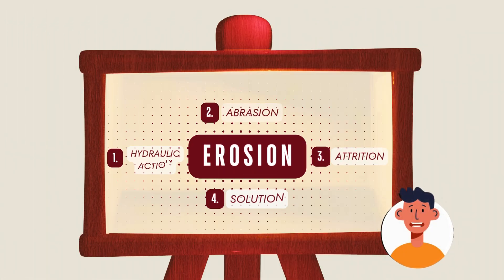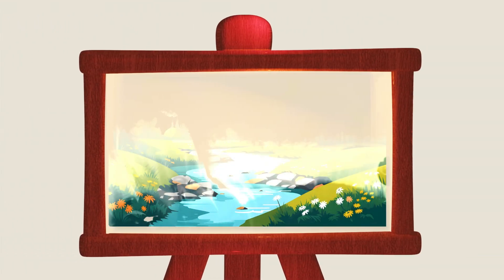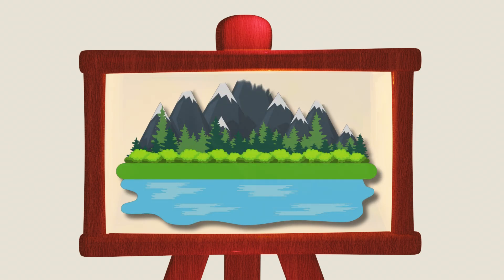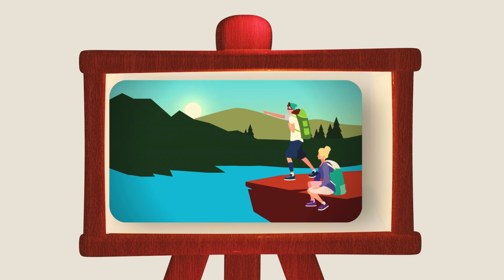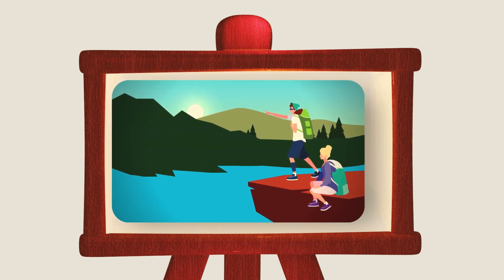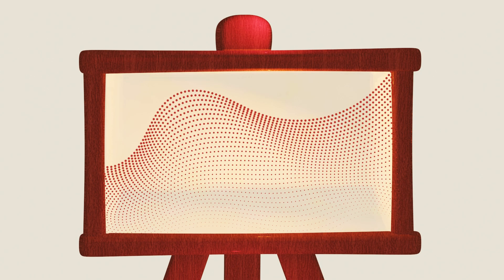Today we're going to explore the four types of erosion, which are key processes in shaping our rivers, coastlines and landscapes over time. These erosional processes gradually wear away rocks and sediment, transforming the natural environment. Each type of erosion works in a different way, so let's break them down into easy-to-follow steps.